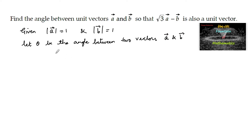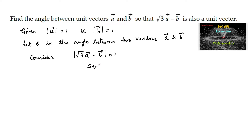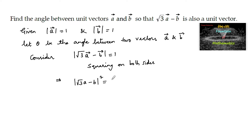Since √3a - b is also a unit vector, consider |√3a - b| = 1. We need to find the angle between the two vectors. Squaring both sides, this implies (√3a - b)² = 1.